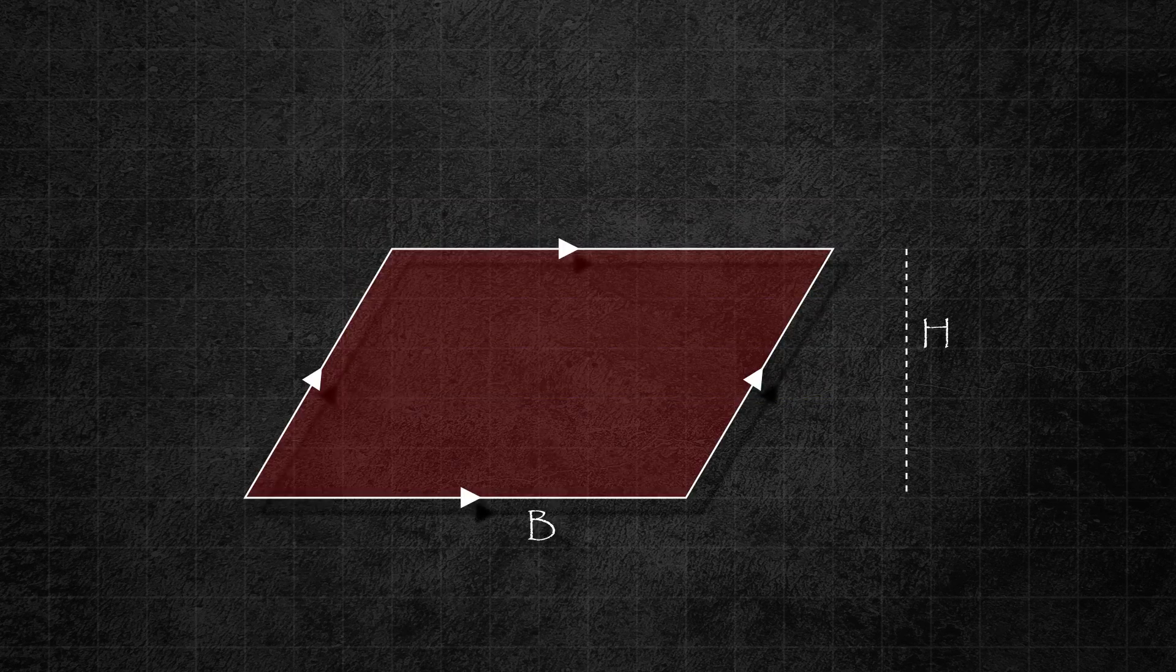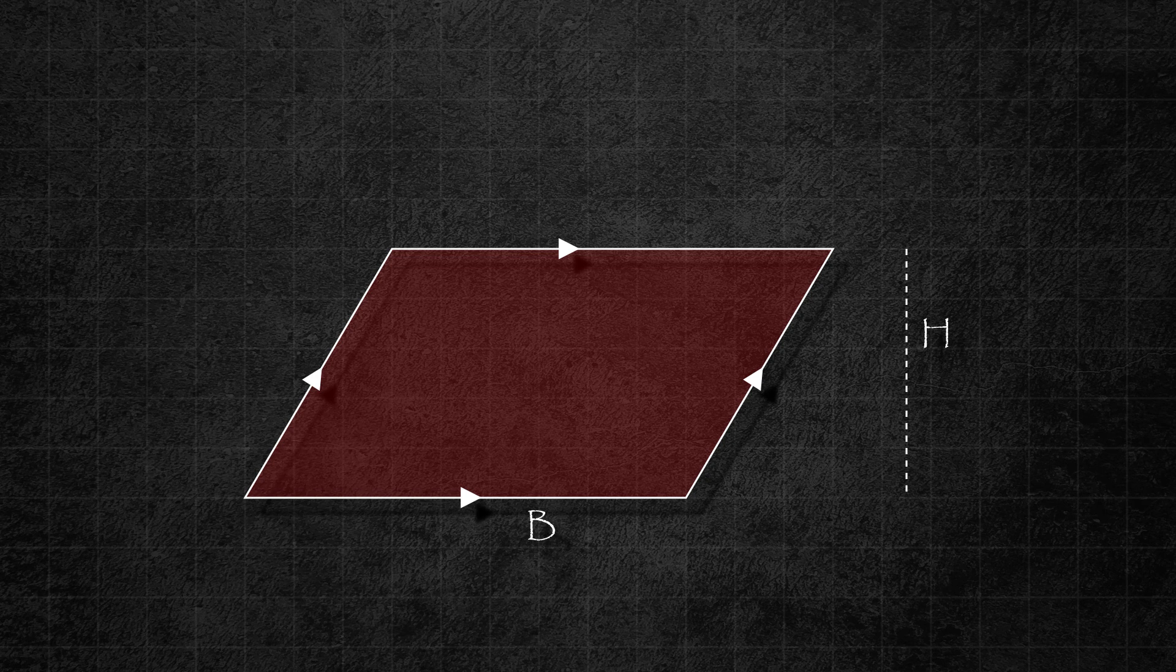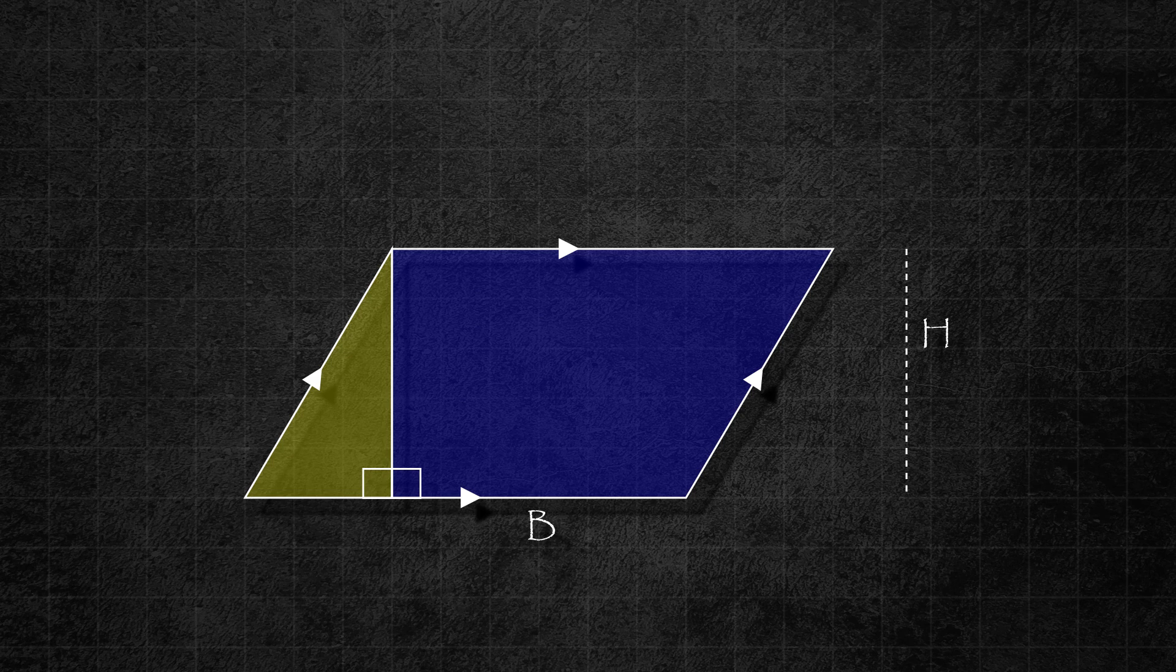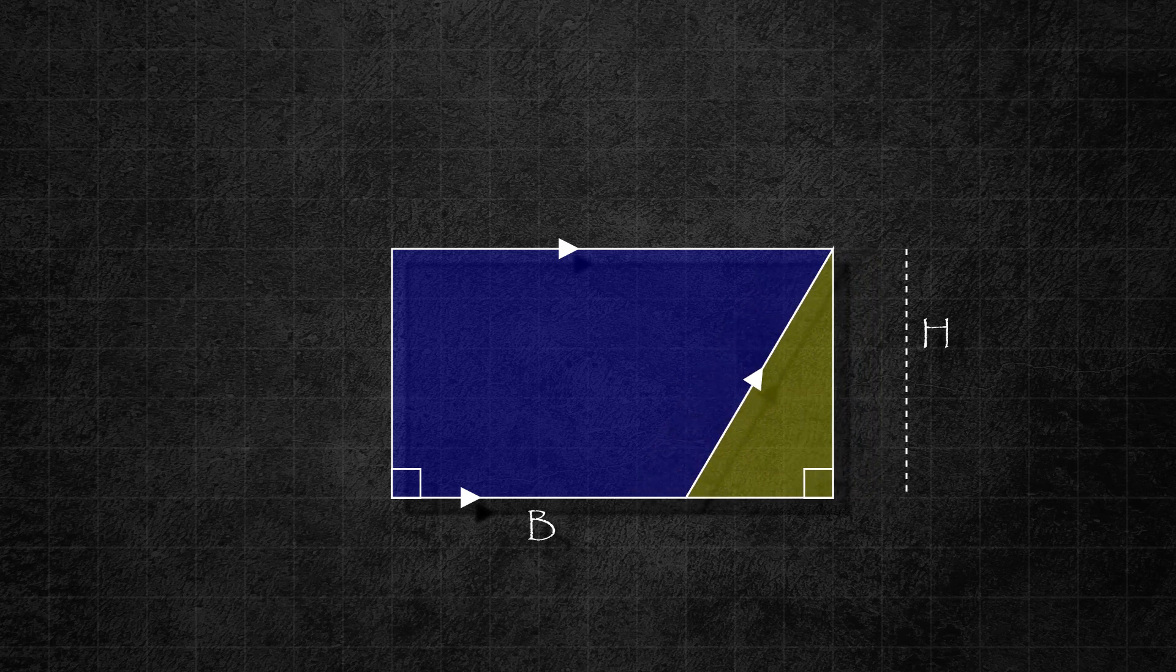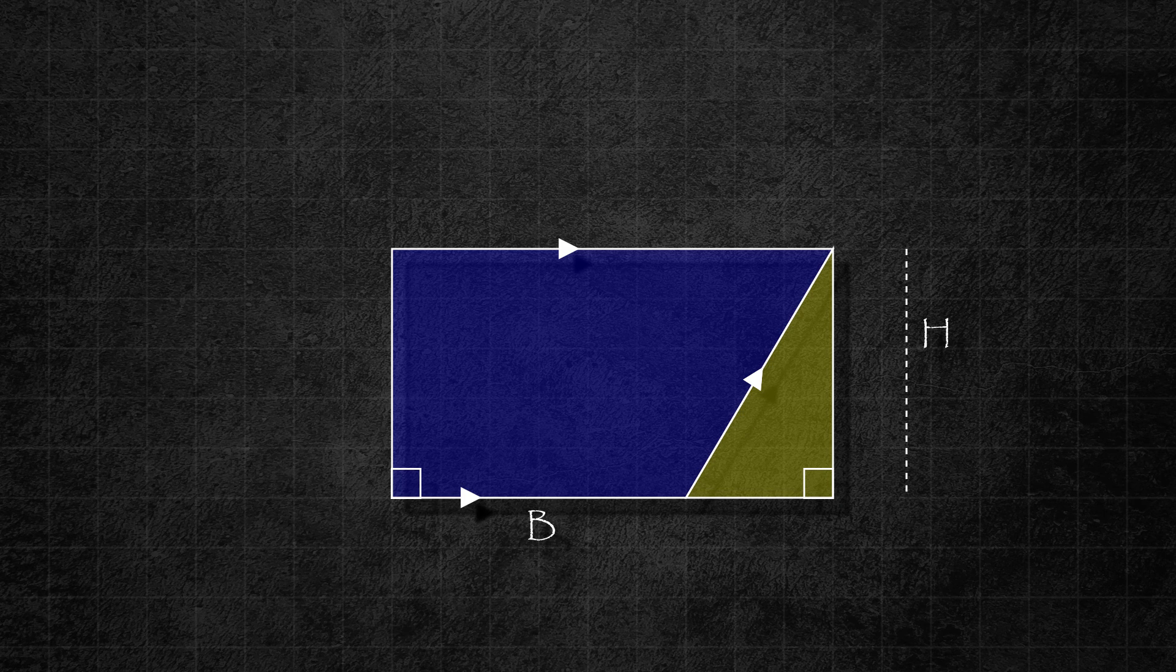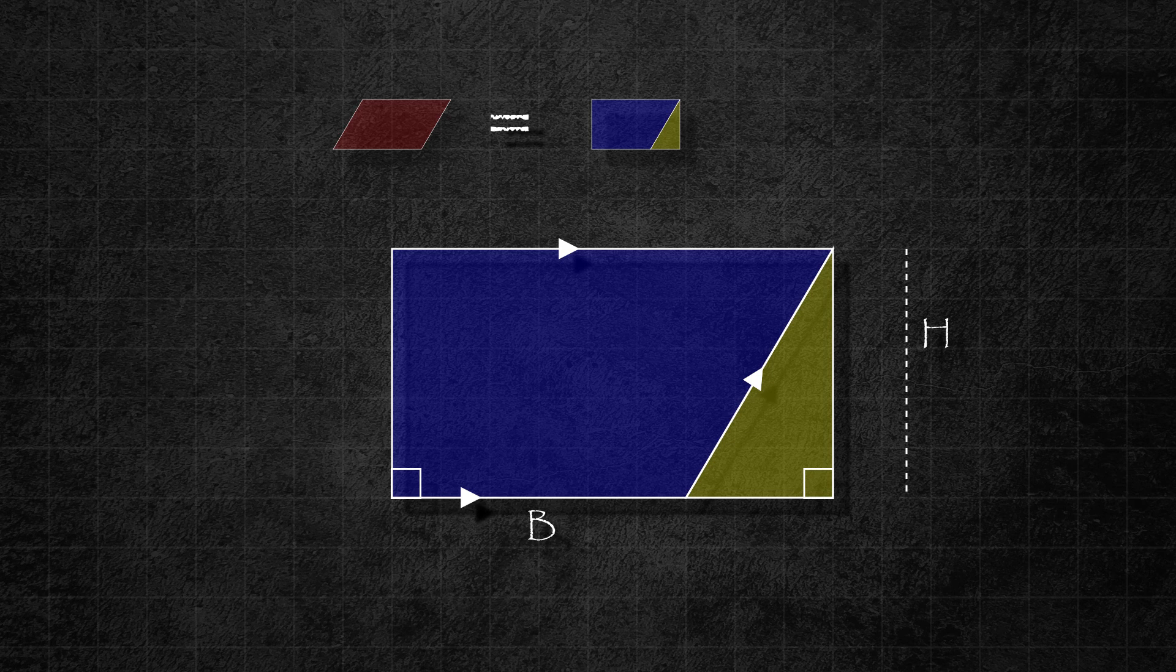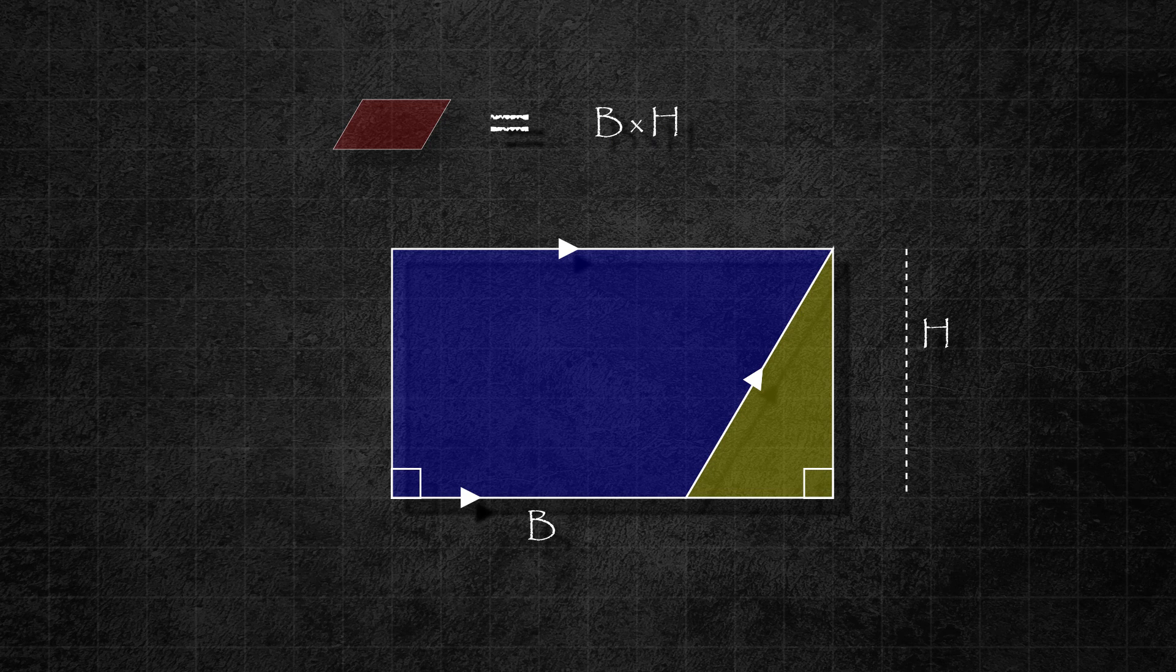Now consider this parallelogram shape. It is a four-sided shape that has two pairs of opposite sides parallel and equal. To simplify this shape, we can split it into two shapes as shown in the diagram. We can then move the yellow right angle triangle to the other end and join it with the blue shape. We find that it forms a rectangle with the same base length b and height h as before. Notice that we just rearrange the parts of the parallelogram to form this rectangle. This means that the area of the parallelogram is the same as the area of the rectangle, which is base times height or b times h.